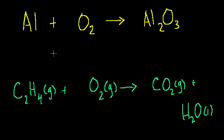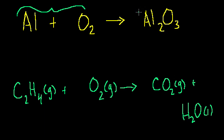Here are some examples. A chemical equation essentially just describes a chemical reaction. You've got some aluminum, you have some oxygen gas — a diatomic oxygen molecule — and then you end up with aluminum oxide. You have your reactants, the things that react, and then the products of this reaction.